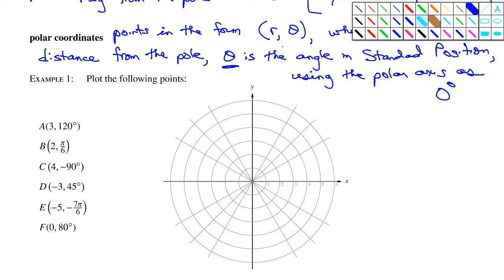Point C is (4, −90°). Go out 4 units, and negative 90 degrees would be straight down to this point here — that's point C. Point D is (−3, 45°). If I draw circle radius 3 and go to 45 degrees, the negative radius indicates you travel back through the pole to the opposite point along the same line. So point D is on the other side.